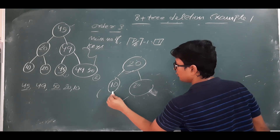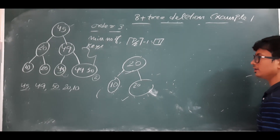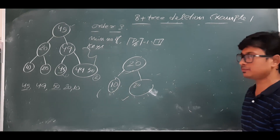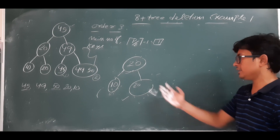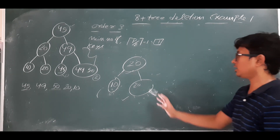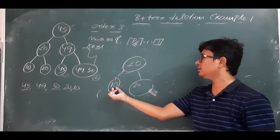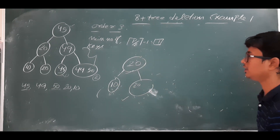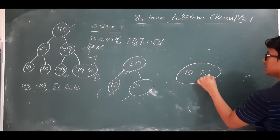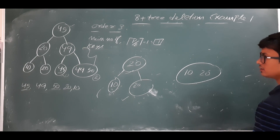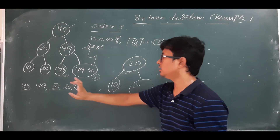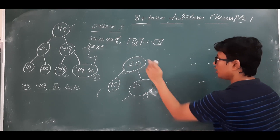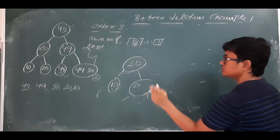Now I want to delete 10. Deleting 10 from its leaf node causes underflow since it drops to zero elements. We try to borrow from the left sibling — there is none. We try the right sibling — it already has the minimum number of elements and cannot give. So we must merge the node with the right sibling. The corresponding entry from the parent should also be deleted. Note that 20 is in both the parent and the leaf node.